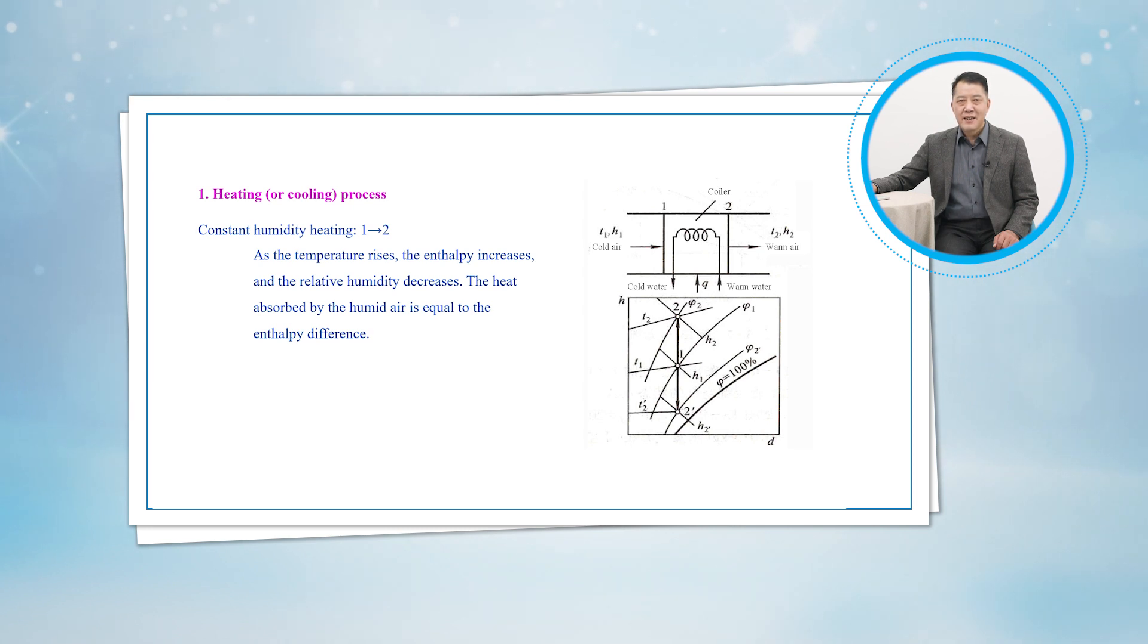This can cause dry skin, respiratory difficulties, and an increase in static electricity. A cooling process is shown as process 1 to 1 prime. This is a constant humidity cooling process. A cooling process at constant specific humidity is similar to the heating process discussed above, except the dry bulb temperature decreases and the relative humidity increases during such a process.